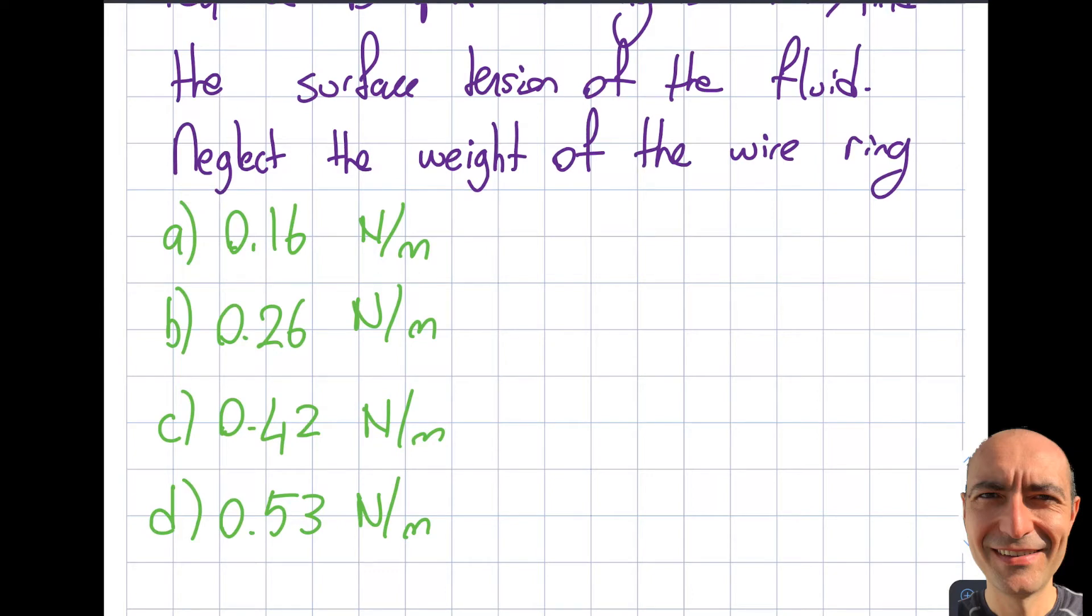This is a fairly straightforward concept for the FE exam purposes because there is only one formula. I'm going to write it over here: surface tension is equal to force divided by L. This is being asked. Force is given to me as 0.1 newtons, so the name of the game here is finding the L.